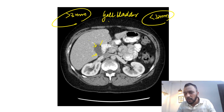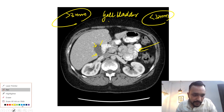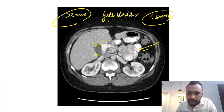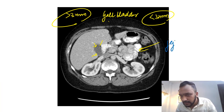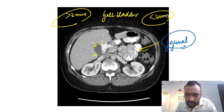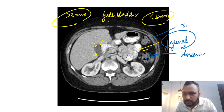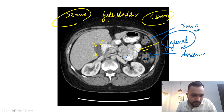Here you can see the jejunal loops with prominent valvulae conniventes. This is your descending colon and this is the transverse colon.